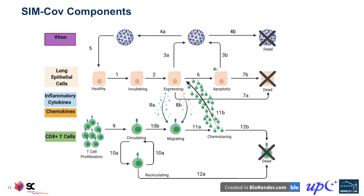The main simulation components include different types of agents: viruses, epithelial cells, T cells, and others. Each has a state machine moving from, for example, a healthy cell to one incubating the virus, to expressing it, becoming apoptotic, and then dying because of T cell invasion — which kills both the virus and the entire cell to eliminate the virus. This illustrates a fairly complicated control pattern depending on whether there's a virus in a particular lung region and where the T cells are in terms of attacking the infected cell.